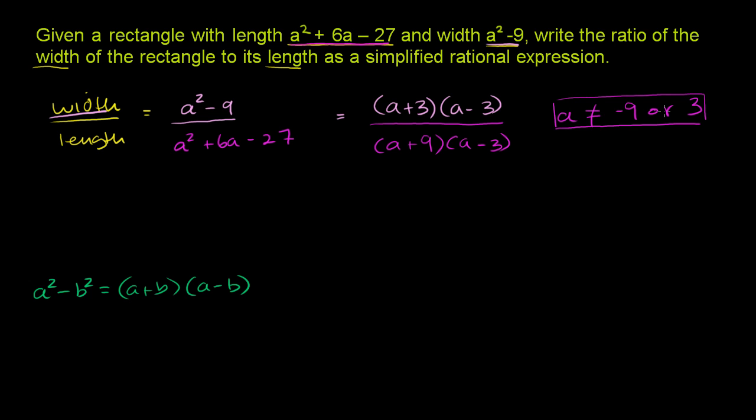Now that we've made this constraint, we can simplify it more. We have an (a - 3) in the numerator and an (a - 3) in the denominator. We're assuming that a is not going to be equal to 3, so we divide the numerator and denominator by that same value. We are left with (a + 3) over (a + 9).